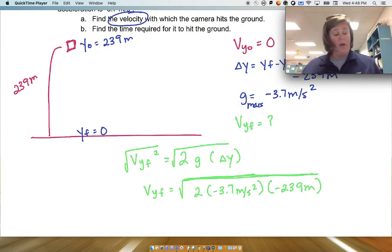So in my calculator, I'm just going to plug in here. I really need to get a new calculator. Stop using my phone. So 2 times 3.7, I know it's negative, times 239, and then we're going to take the square root.